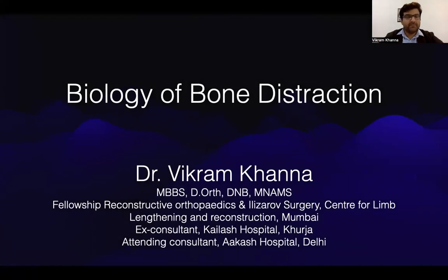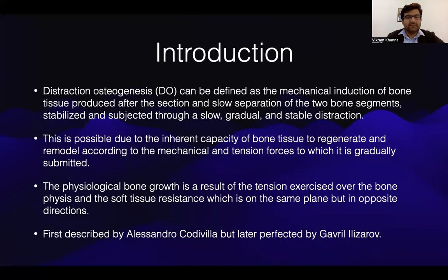Good morning everyone, I'm Dr. Vikram Kanna and I'll be speaking on the biology of bone distraction. Distraction osteogenesis can be defined as the mechanical induction of bone tissue produced after the section and slow separation of the two bone segments, stabilized and subjected through a slow, gradual, and stable distraction. This is possible due to the inherent capacity of bone tissue to regenerate and remodel according to the mechanical and tension forces to which it is gradually submitted. The physiological bone growth is a result of the tension exercised over the bone surfaces and the soft tissue resistance which is on the same plane but in opposite directions.